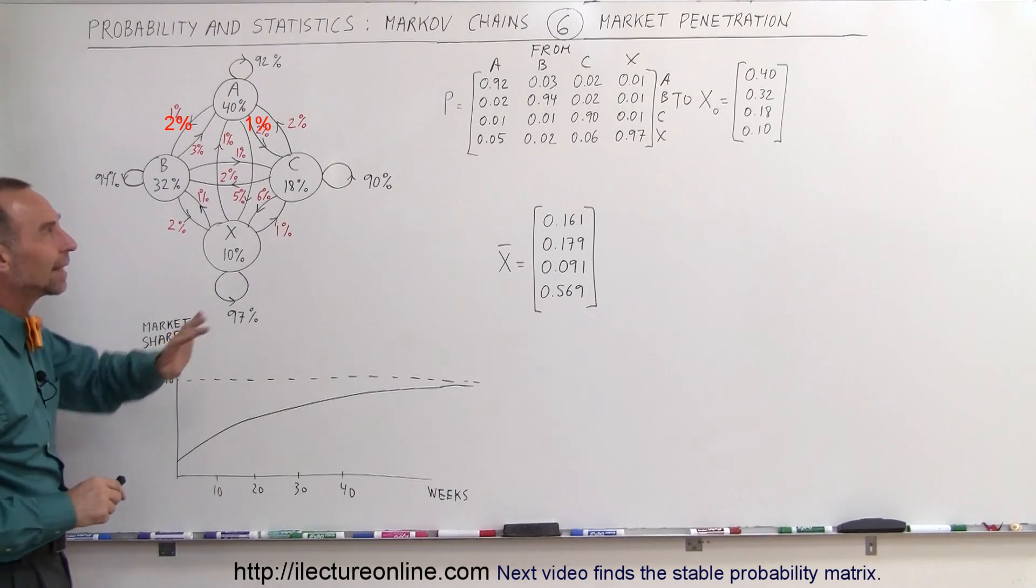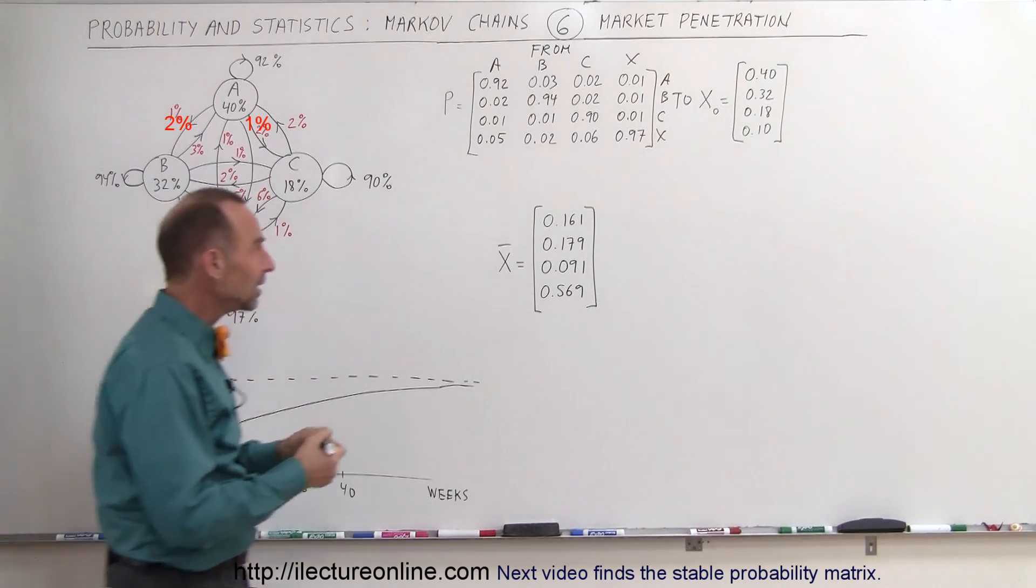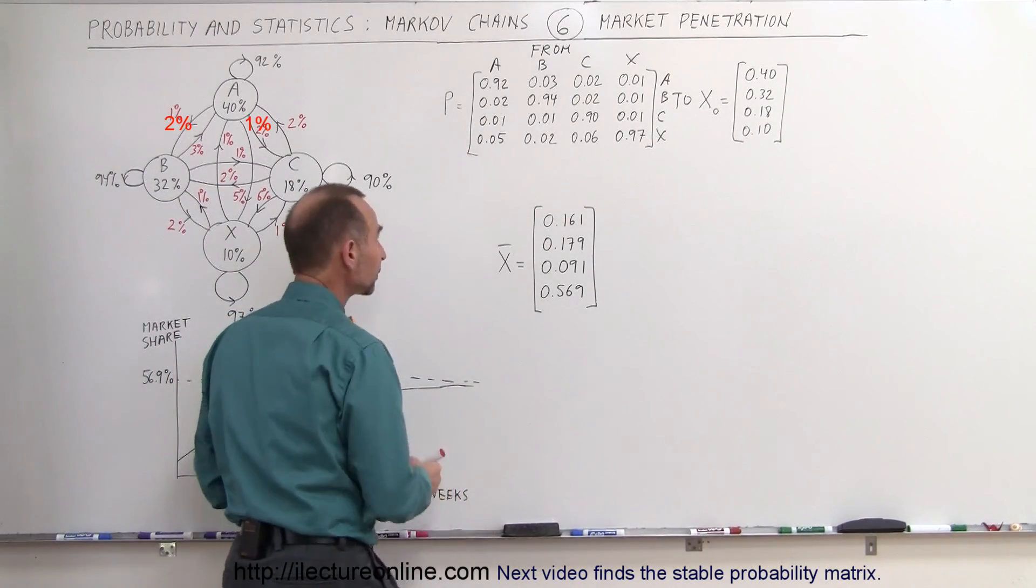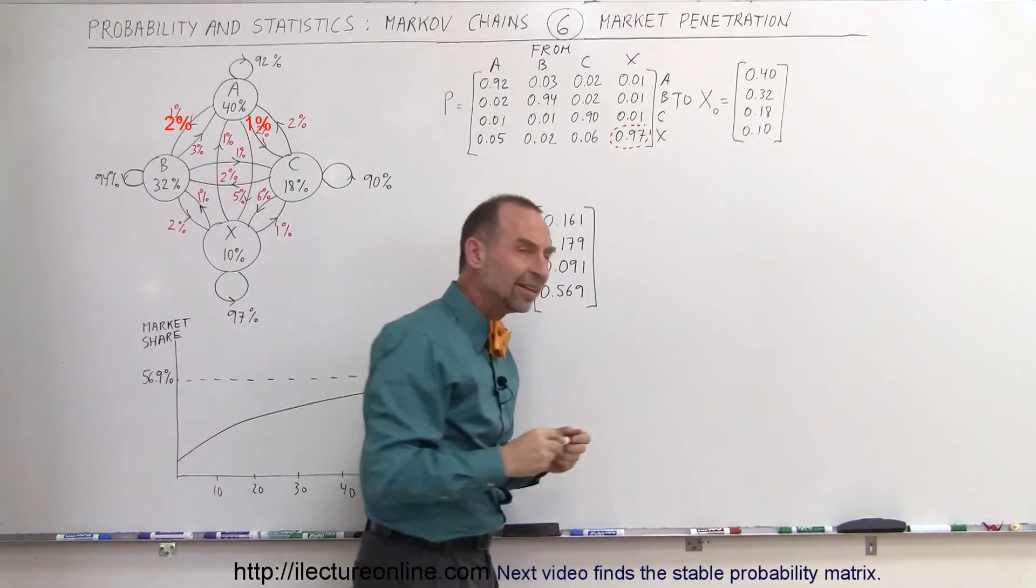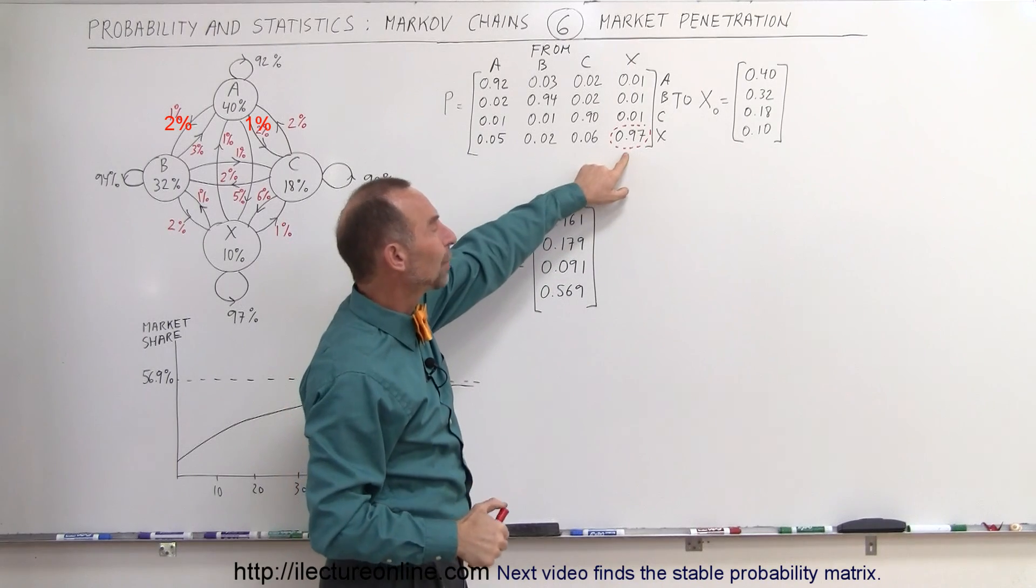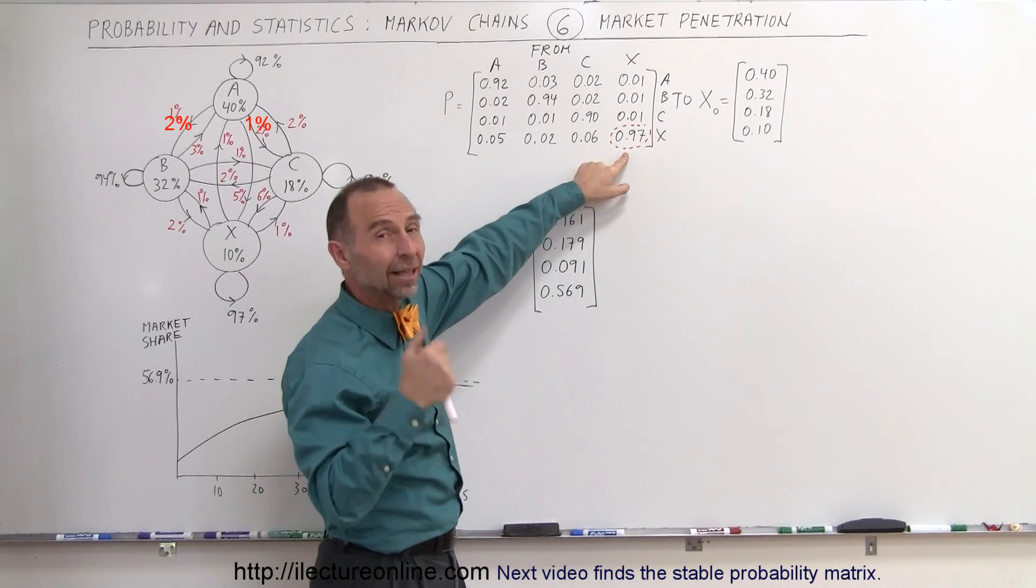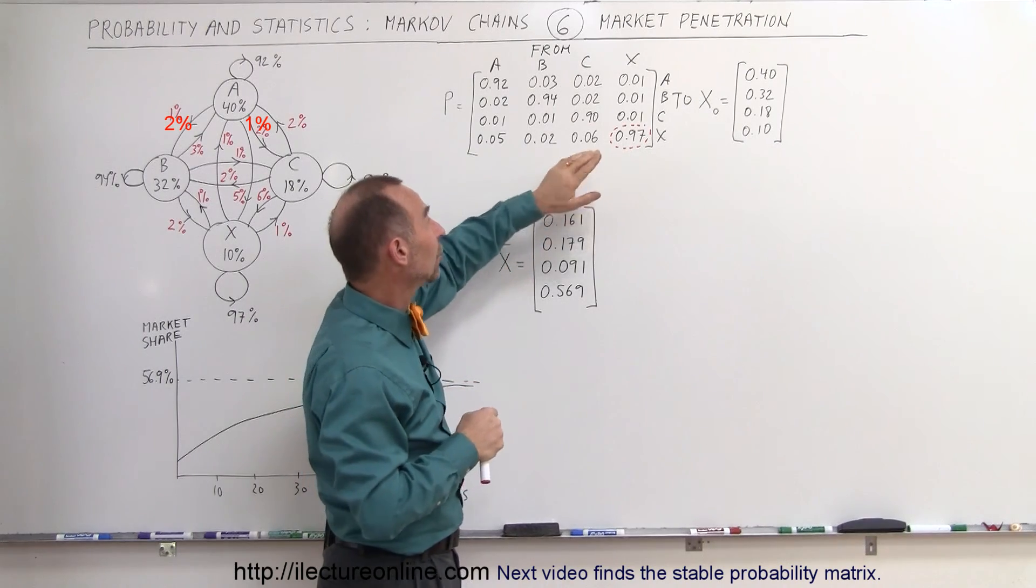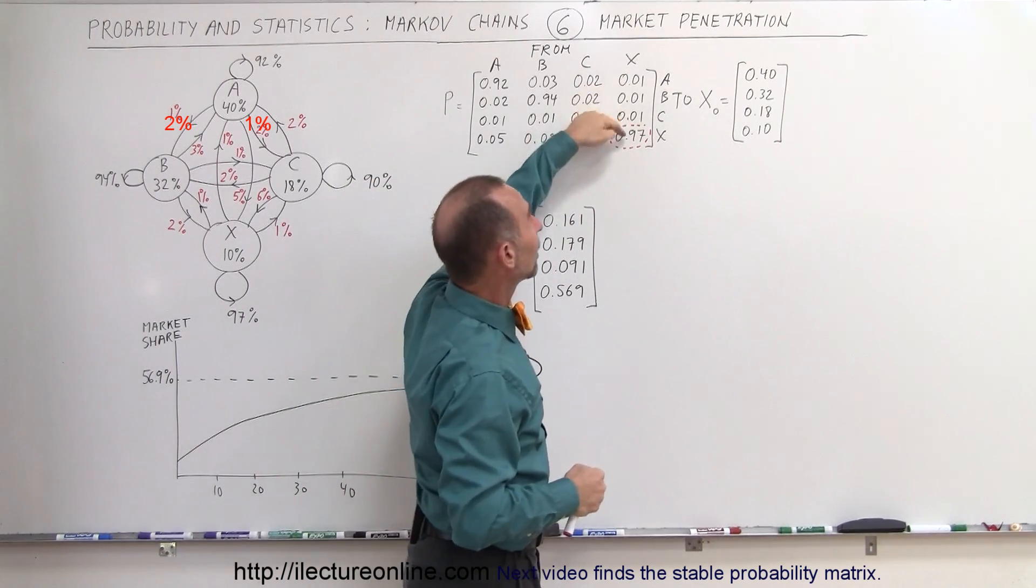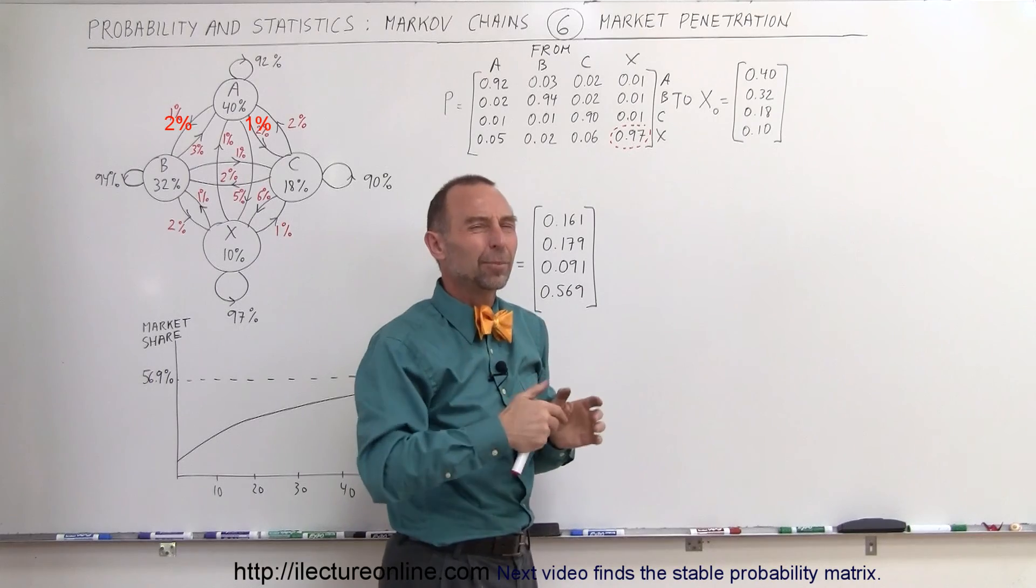Now let's take another look at the probability matrix. Right here, let me get a different color. This could be considered like the loyalty number. 97% will remain with brand X after they bought it, they tried it, they liked it, and 97% will continue to buy brand X, where the other 3% will buy one of the other brands.